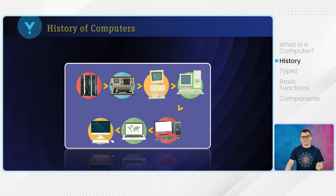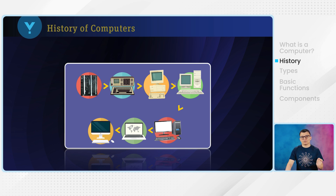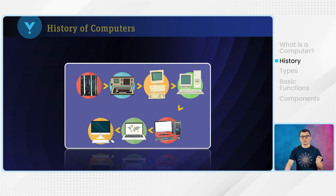And then during the 70s to 80s, those years saw the rise of the personal computers, because during that time the Apple II and IBM personal computers were introduced. And then from the 90s to 2000s, the internet came along and it revolutionized computing — it was a game changer. And today, computers continue to evolve at a rapid pace, because technologies are evolving too.